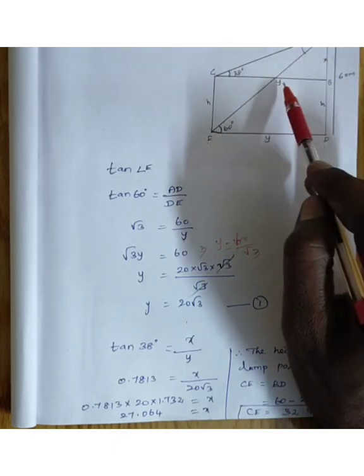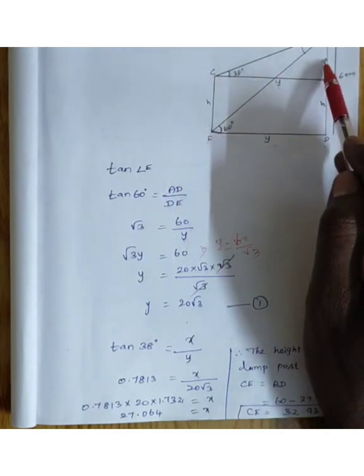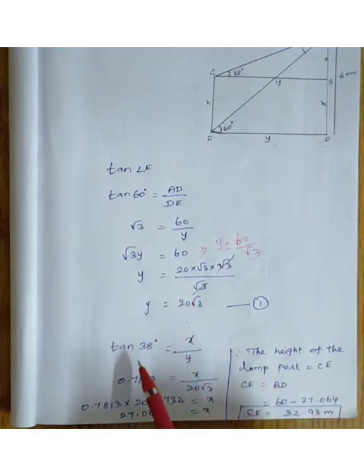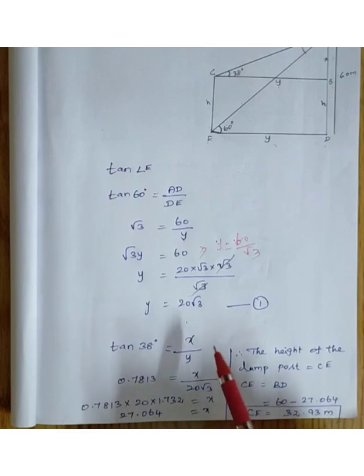So 0.7813 equals x divided by y, which equals x divided by 20 root 3. Multiplying, 20 times root 3 times 0.7813, where root 3 equals 1.732, gives us x equals 27.064.